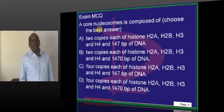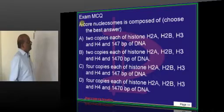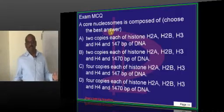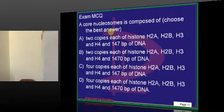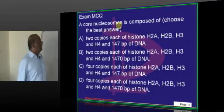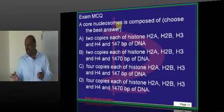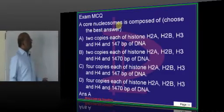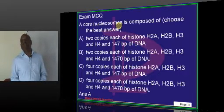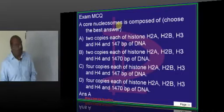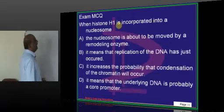What is the core nucleosome composed of? Two copies each of histones H2A, H2B, H3, and H4, organized around 147 base pairs of DNA, typically constitutes the core nucleosome — that is what you have to basically remember.